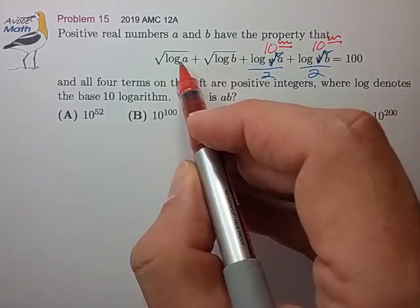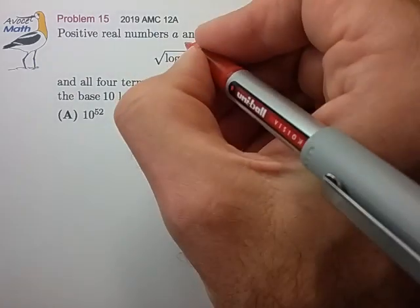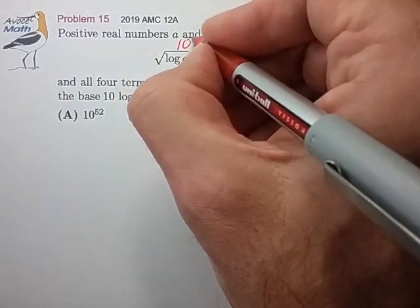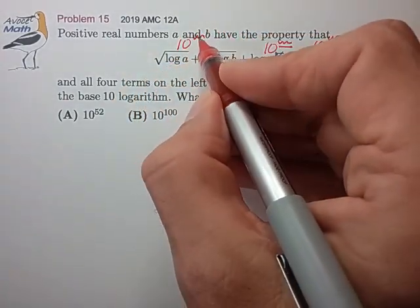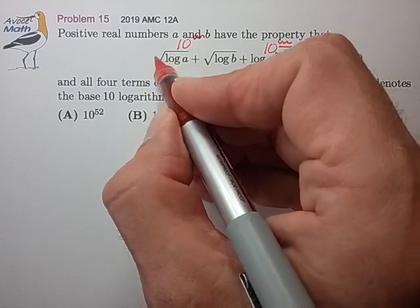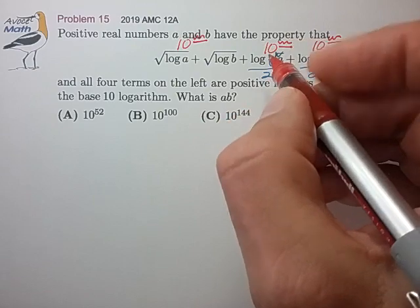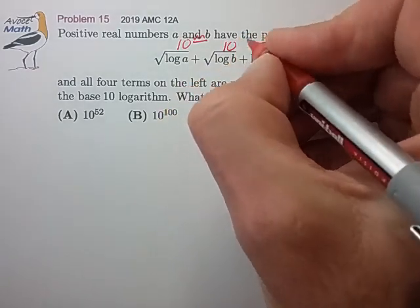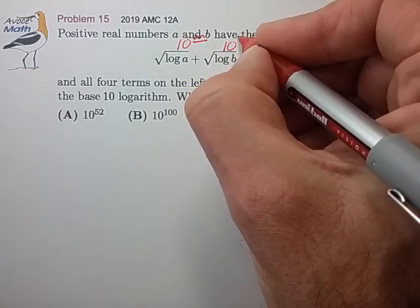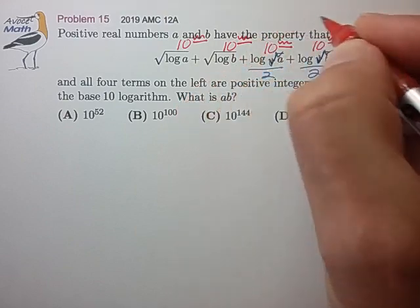If we look at these two terms we see that a has to be of the form 10 to some exponent, but now when this exponent comes out of the log we have to be able to take the square root and end up with an integer, so this has to be a perfect square. Likewise for b, b has to be 10 to some exponent that's a perfect square.